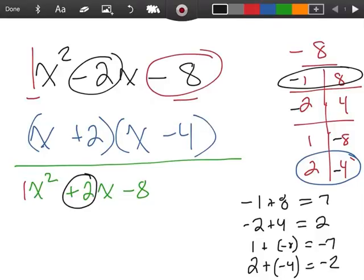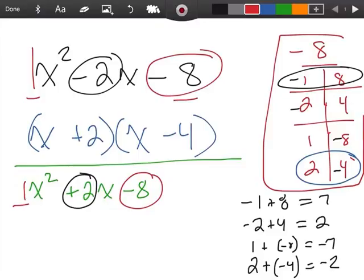But, my process is going to be the same. So, when I multiply 1 times, again, negative 8, I'm still getting the same number. Right? Negative 8. But, now I want them to add up to a positive 2. Well, notice which ones add up to the positive 2. The negative 2 and the positive 4.